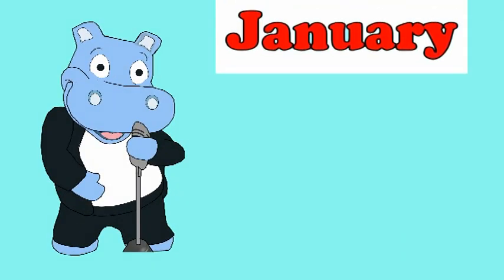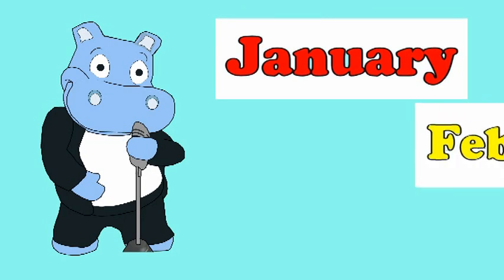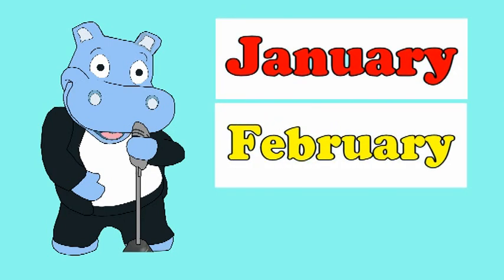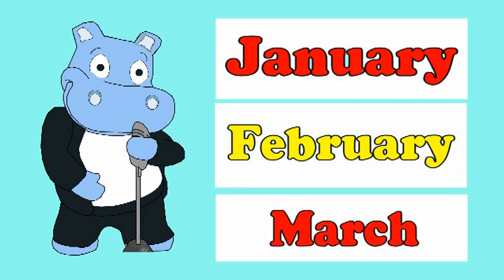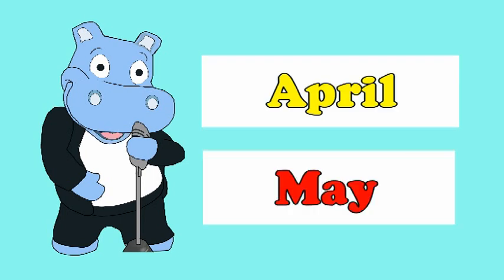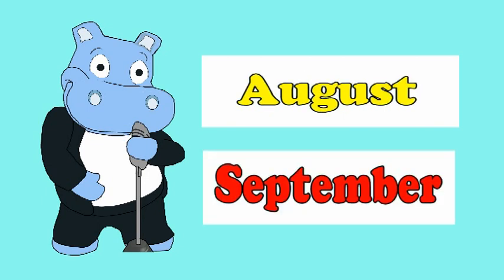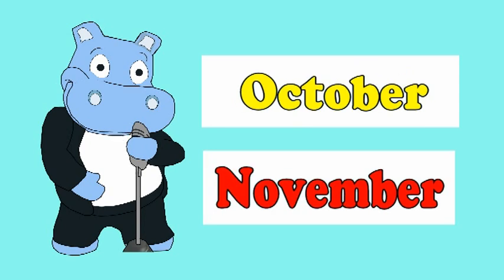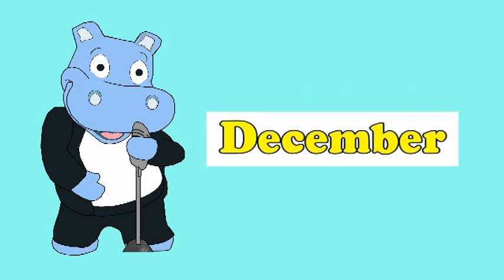January is where it starts, February, and then comes March, April, May, June and July, August, September, October and November, and ends with December.